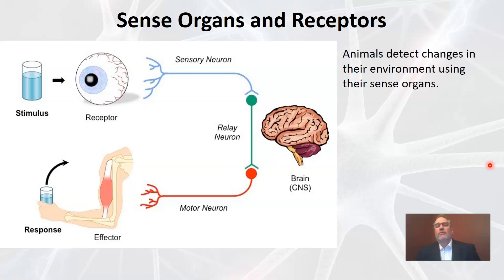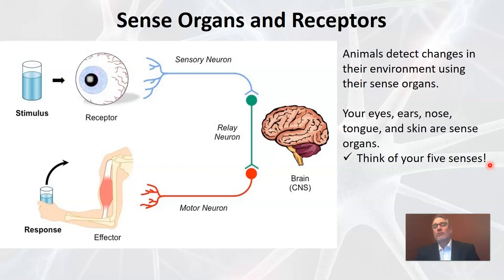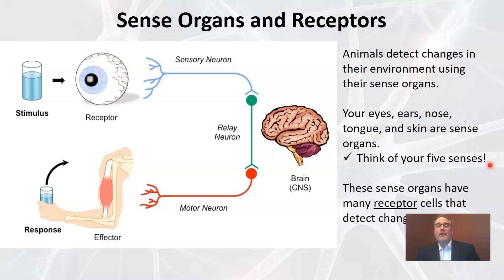Animals detect changes in their environment using their sense organs — your eyes, ears, nose, tongue, and skin. Those are all sense organs, always think of your five senses. These organs are mostly part of your central nervous system. Sense organs have special receptor cells that are able to detect changes in the environment. Receptors are just specialized cells that detect changes and are used by an organism to gather information about the environment around it.